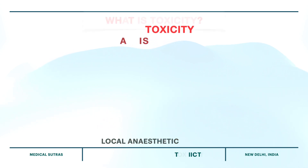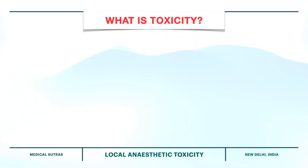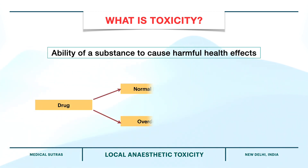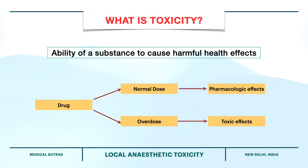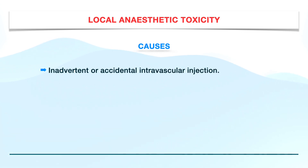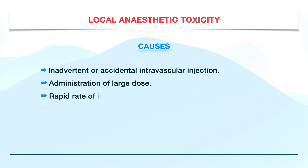Starting with what does toxicity mean? In scientific terms, toxicity is the ability of a substance to cause harmful health effects. In the case of local anesthetics or any other drug, when the drug is administered in large quantities, their pharmacologic action goes beyond what was intended, which results in toxic or harmful effects. The overdose may occur due to inadvertent or accidental intravascular injection, administration of a large dose, or a rapid rate of injection.